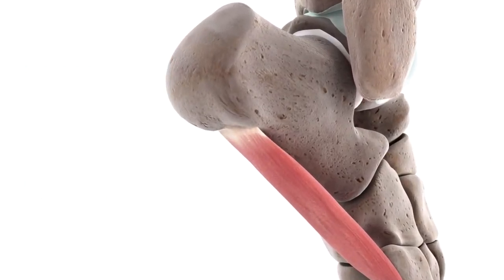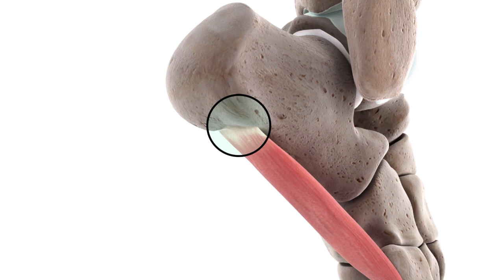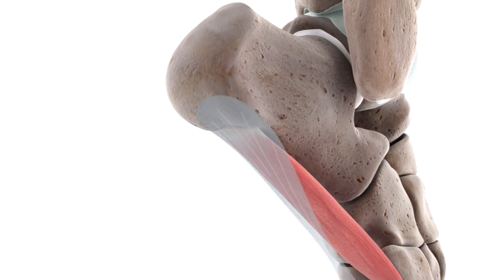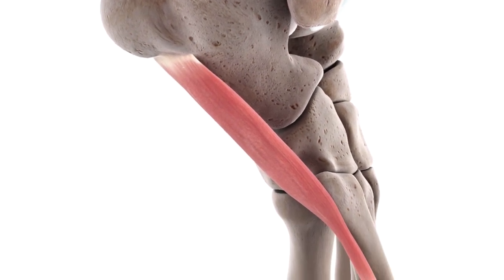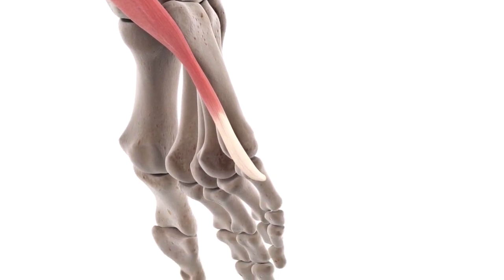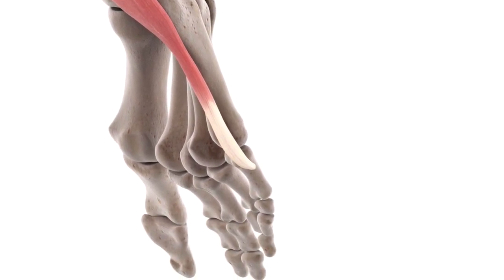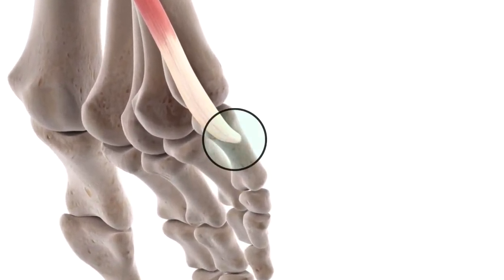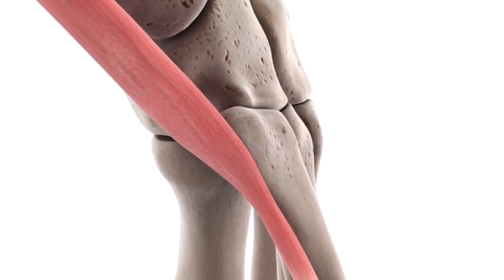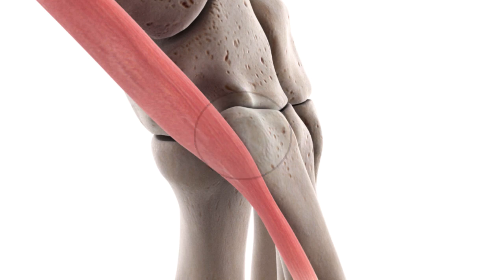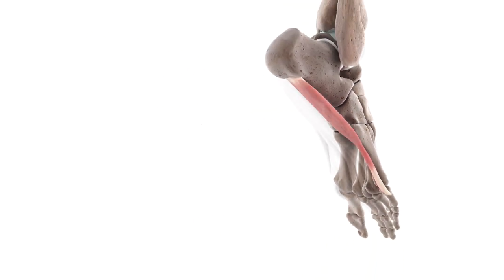The abductor digiti minimi muscle has its origin or proximal attachment point at both the medial and lateral processes of the calcaneal tuberosity, in addition to the plantar aponeurosis. From here its long tapered belly courses distally towards the lateral border of the foot, where it finds its insertion or distal attachment point at the base of the proximal phalanx of the little toe. It may also have an additional attachment at the tuberosity at the base of the fifth metatarsal bone.